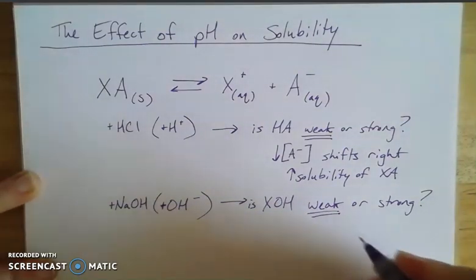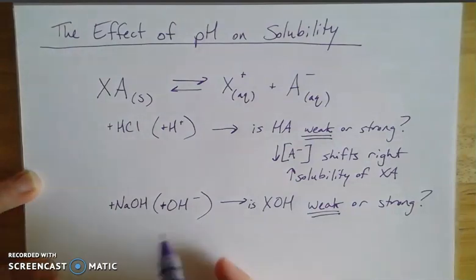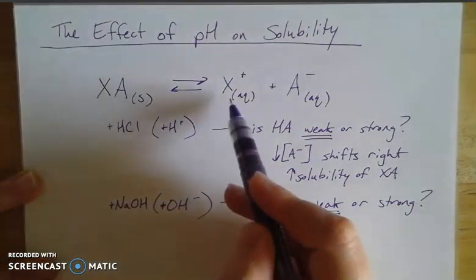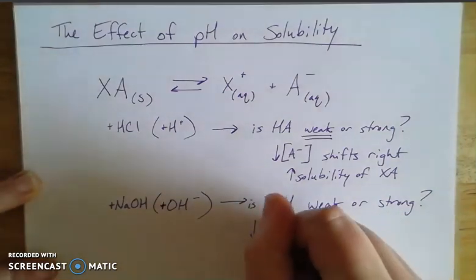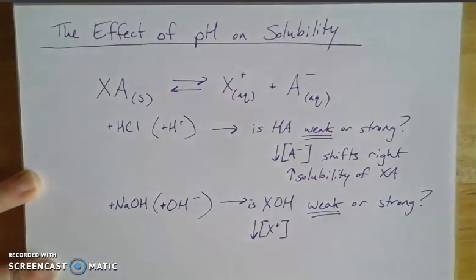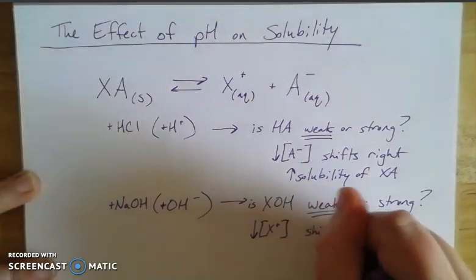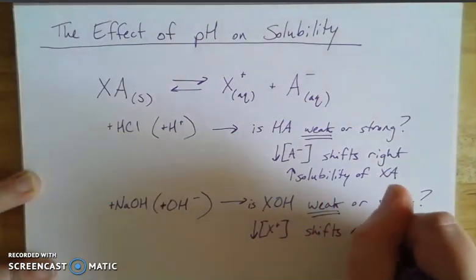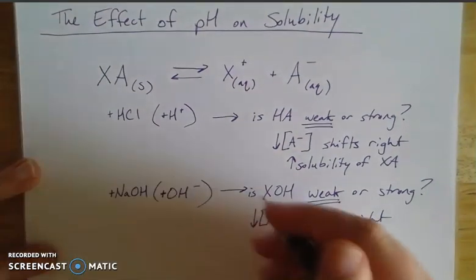Now again, if it's weak, so if I have a metal hydroxide that's weak, then when I add hydroxide, it's going to pull the X cation out, which is going to decrease that concentration of whatever metal cation that is. And that also is going to have the same impact. It's going to shift the reaction right to fill that hole.